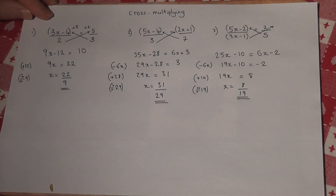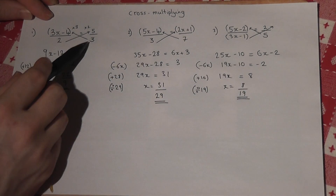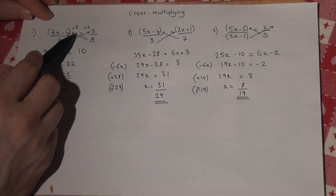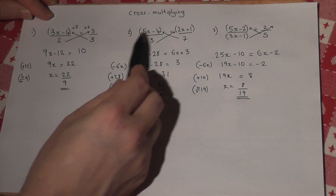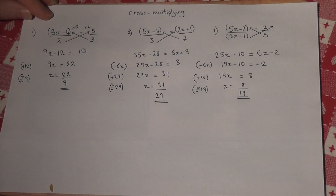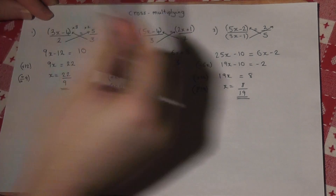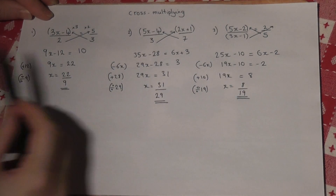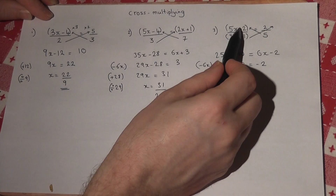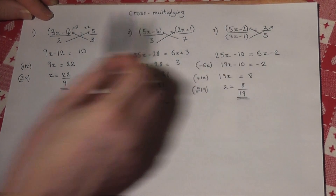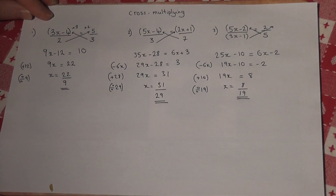The golden rule: always times up by the denominator to the other numerator, putting brackets around the tops when necessary — or the bottoms when necessary. And remember to times both things in the bracket by the required number.